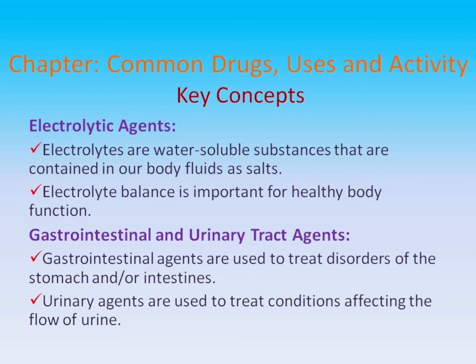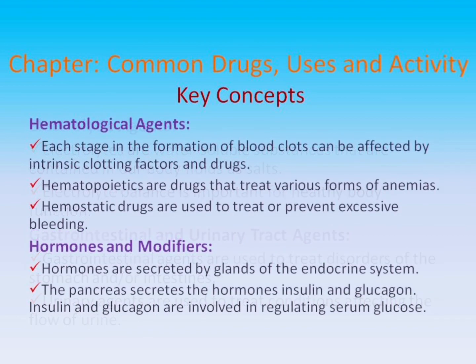Gastrointestinal and urinary tract agents: Gastrointestinal agents are used to treat disorders of the stomach and/or intestines. Urinary agents are used to treat conditions affecting the flow of urine. Hematological agents: Each stage in the formation of blood clots can be affected by intrinsic clotting factors and drugs. Hematopoietics are drugs that treat various forms of anemias. Hemostatic drugs are used to treat or prevent excessive bleeding. Hormones and modifiers: Hormones are secreted by glands of the endocrine system. The pancreas secretes insulin and glucagon, which are involved in regulating serum glucose.